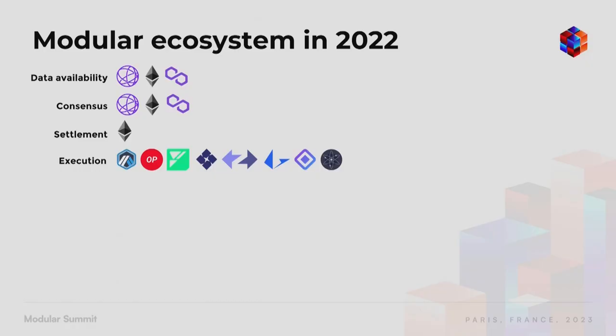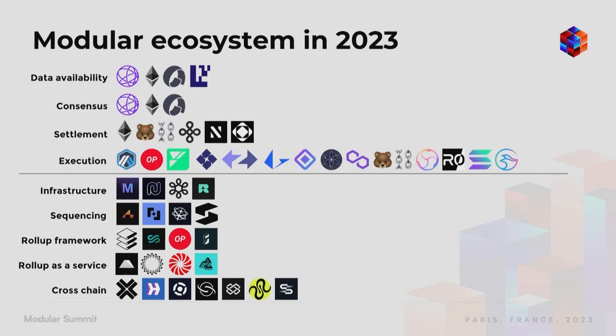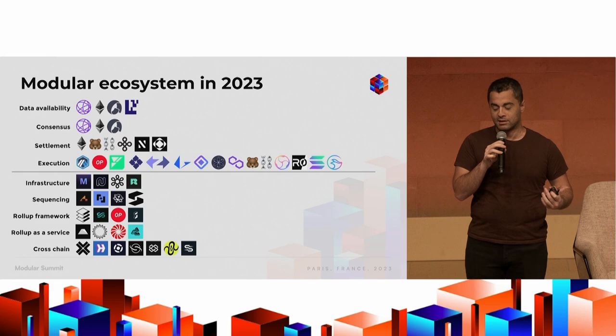Let's talk about what the modular stack looks like today. We've made a lot of progress over the past 12 months. A year ago in 2022 the stack was mostly theoretical — Ethereum was the only settlement layer, very few execution layers, and not a lot of infrastructure. But now we have various new data availability, consensus, settlement, and execution environments.